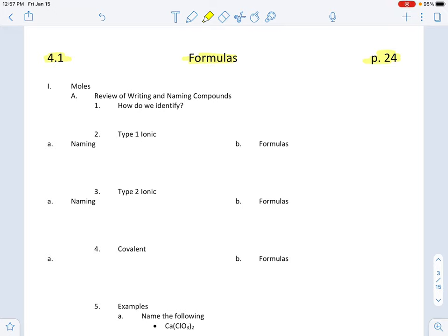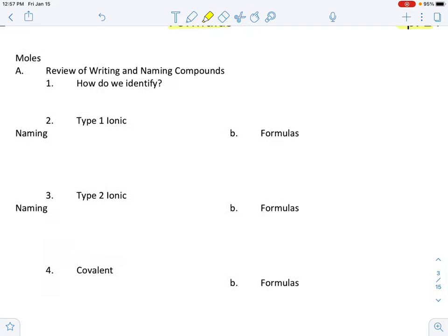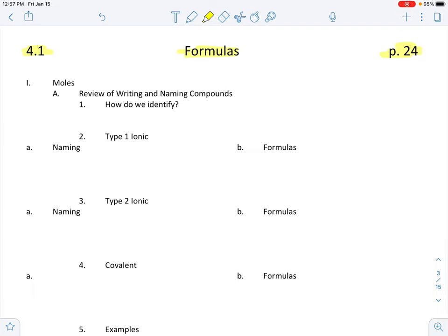So our first step is to review formulas. Remember, this is stuff we learned in first semester, so hopefully it'll come back to us fairly quickly. Before we get started, remember you will need your periodic table for this. If you don't have a periodic table, you could always look one up on the internet. This title of this unit is moles and we're going to review writing and naming compounds. So how do we identify them is our first step?